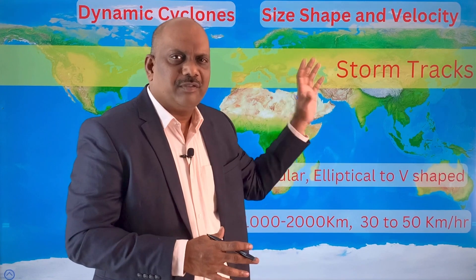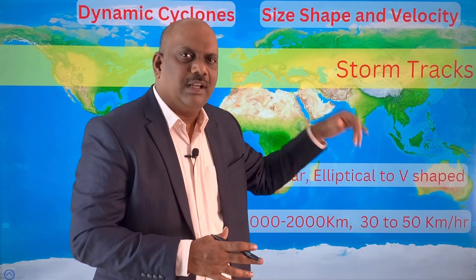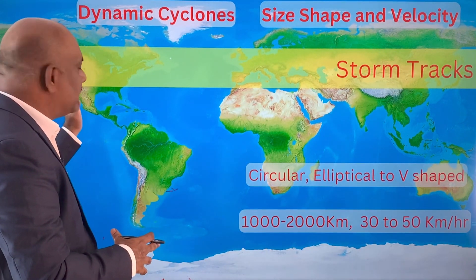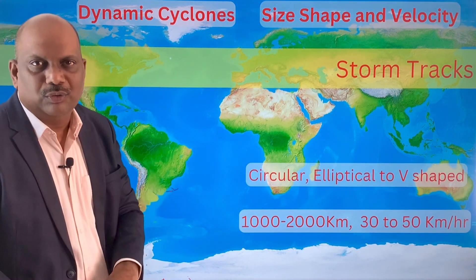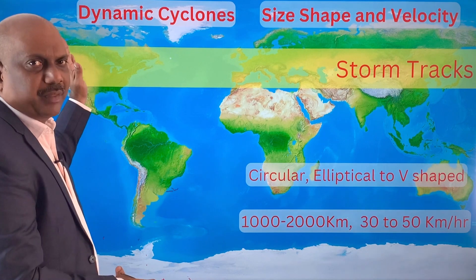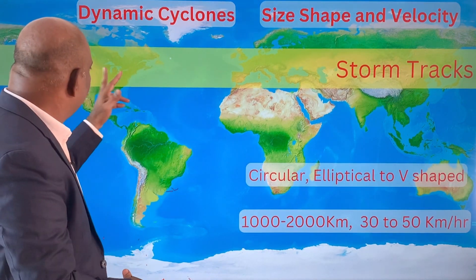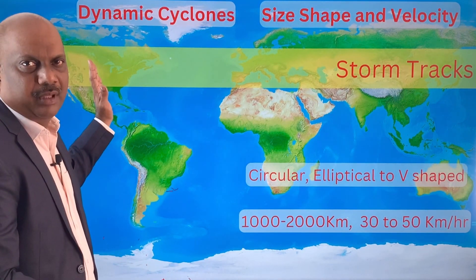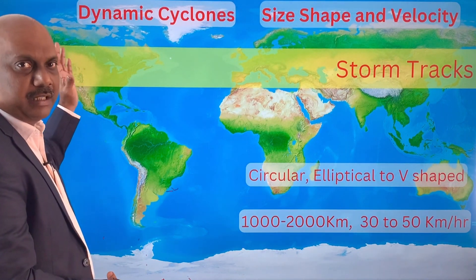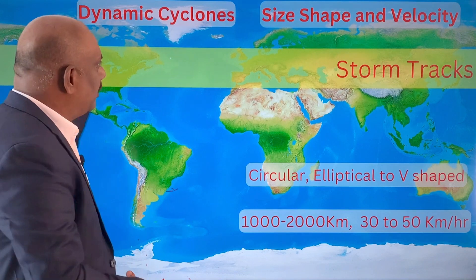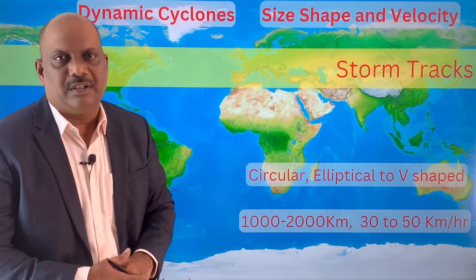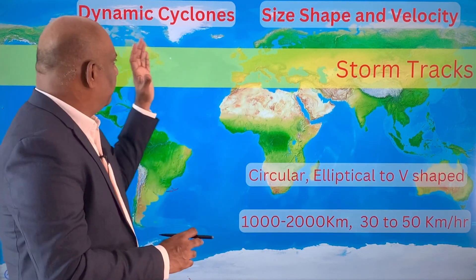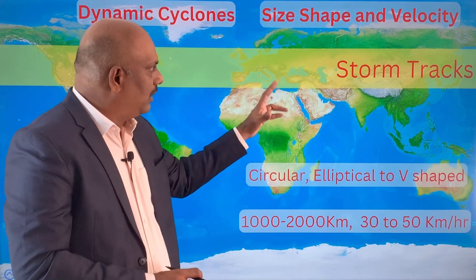There are specific regions where cyclogenesis actually happens. In North America, for example, there are Colorado Lows to the east of Colorado, Alberta Lows in Canada next to Alberta, cyclones in the Great Lakes region, and one more region to the east of the Sierra Nevada range. After their formation, temperate cyclones move from west to east under the influence of westerlies. The paths etched by temperate cyclones are called storm tracks.